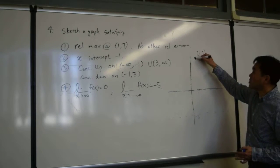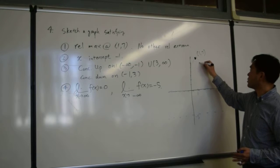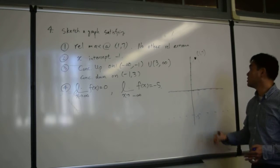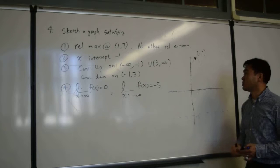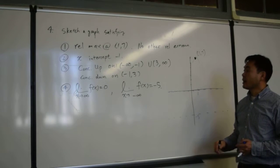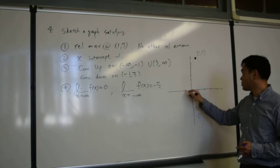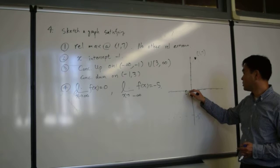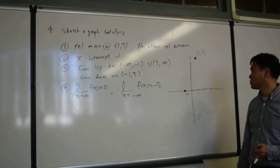It has to be a relative maximum, so it has to be something like this. Locally, it should be your maximum. The x-intercept should be negative 1, so here is negative 1. We have to pass through this point.